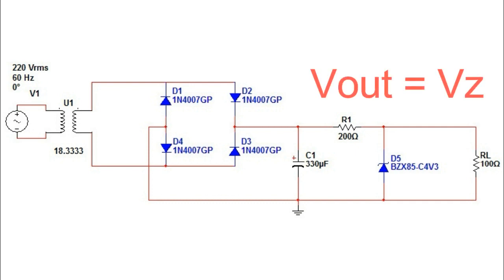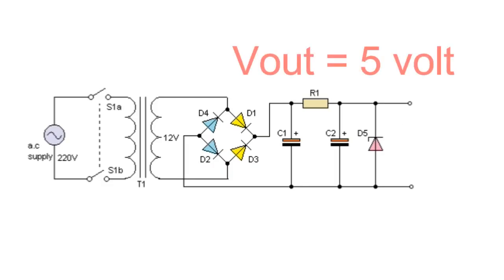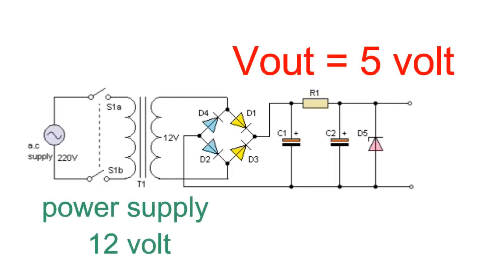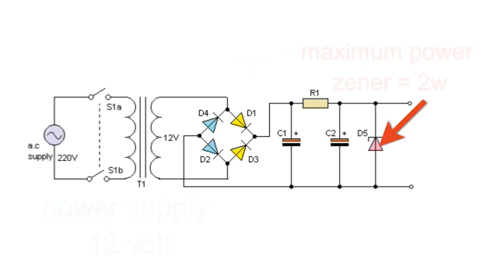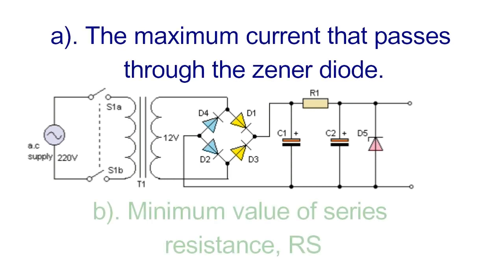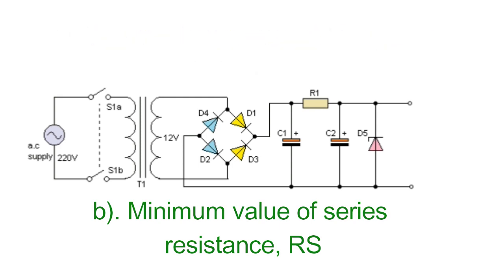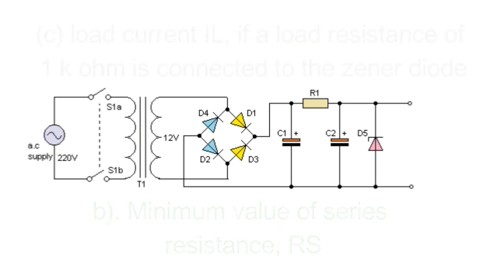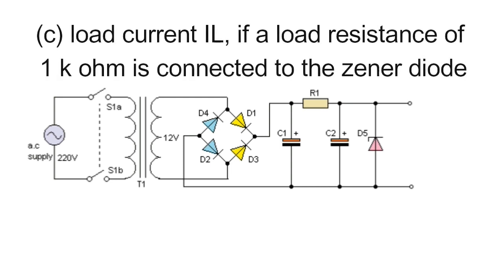We need a stabilized voltage of 5.0V from a 12V DC power supply, and the maximum power of the Zener diode is 2W. Using the previous Zener regulator circuit, calculate: A) the maximum current that passes through the Zener diode, B) minimum value of series resistance RS, C) load current IL if a load resistance of 1k ohm is connected to the Zener diode, and D) Zener current IZ at full load.